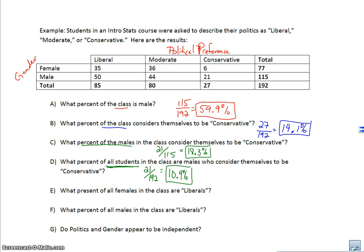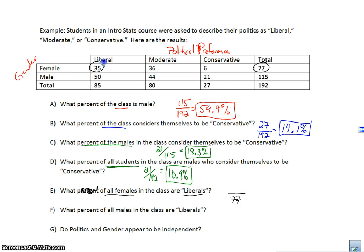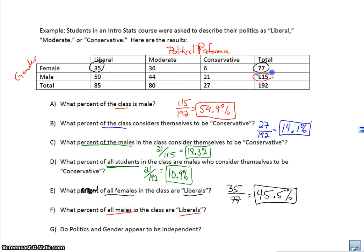What percent of all females in the class are liberals? We go to the females — there are 77 — and liberal females number 35. So 35 out of 77 is 45.5%. What percent of all males in the class are liberals? There are 115 males, and 50 of them consider themselves liberal, which is 43.5%.